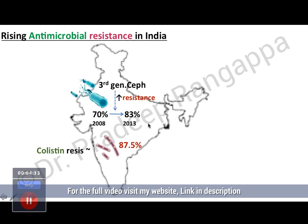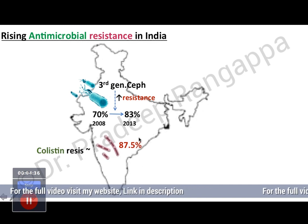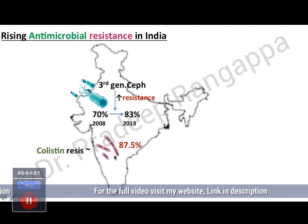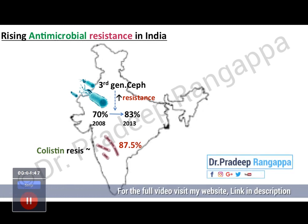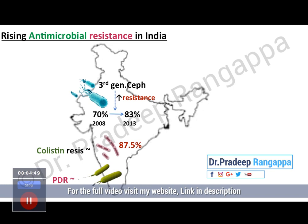Especially for the coliforms, Klebsiella pneumoniae resistance is predominant to colistin, with 87.5% of colistin resistance coming mainly from Klebsiella. So there is a resurgence of Klebsiella species having resistance to colistin, and there is Pseudomonas which is pan-drug resistant. This is the main concern currently.